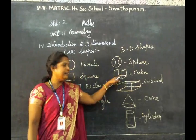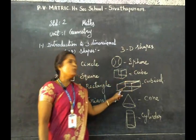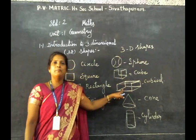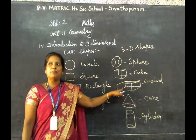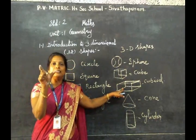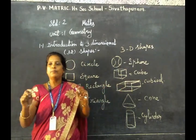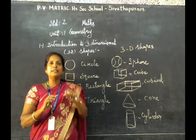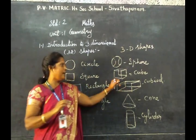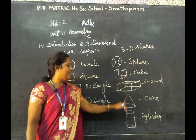Cuboid shape examples: matchbox, tea packet, book — these are cuboid shapes.